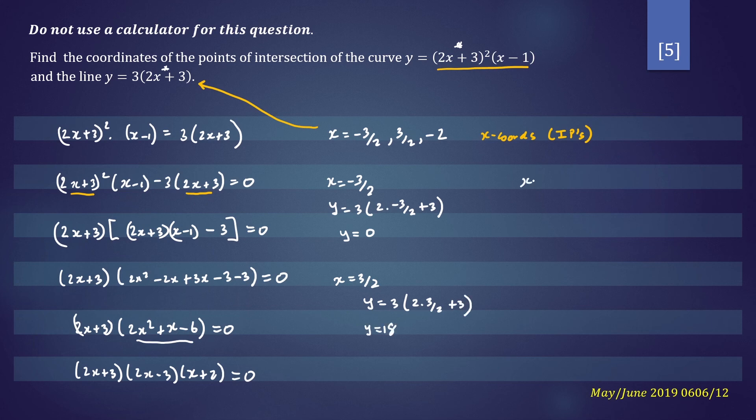And lastly, if x equals negative 2, y will be equal to 3 times 2 times negative 2 plus 3. So y will be equal to negative 3. So your three intersection points are negative 3 on 2 comma 0, 3 on 2 comma 18, and negative 2 comma negative 3. Thanks for watching.